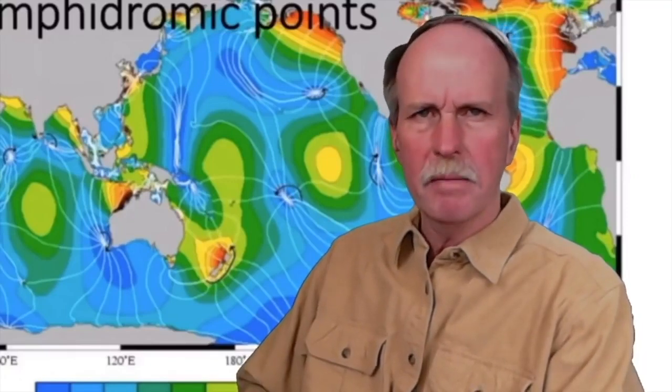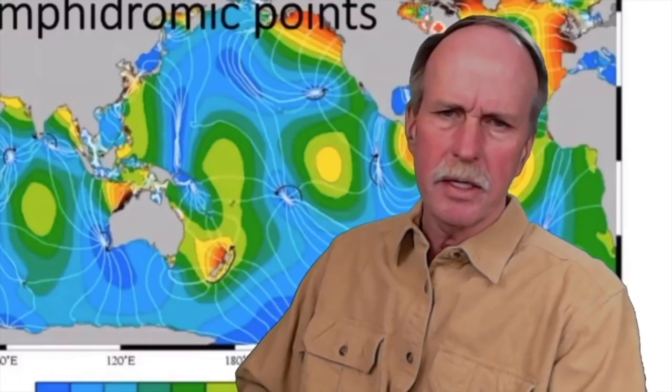If you look up amphidromic points in Wiki, you will see that they are the center of rotation of tides due to currents coming into contact with each other and setting up a whirlpool type effect, which may extend over hundreds of square miles. And they are due to the topography of the bottom of the ocean, ocean currents, and in some cases, land masses as they go through. We'll see that in a minute. But let's look at these guys out in the middle of the Pacific Ocean first.